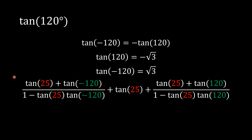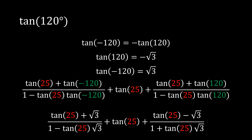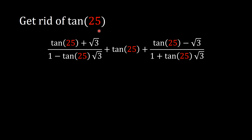Now we simplify. Wherever we see tangent of 120 degrees, we plug in negative radical 3, and wherever we see tangent of negative 120 degrees, we plug in radical 3. The expression looks much simpler now. Our goal is to eliminate tangent of 25 degrees, since we can't write it in a nice closed form, by combining everything into one fraction.